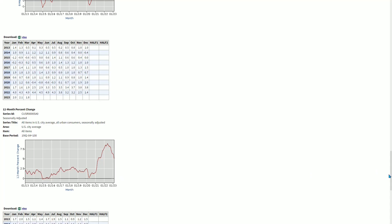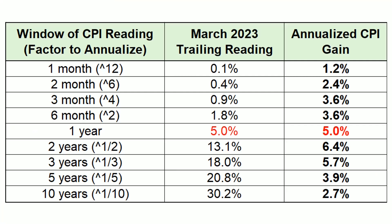There's another way to look at this: the table I've shown in recent months. I take the U.S. CPI in all those snapshot windows — one month, two months, three months, six months, one year, two years, three years, five years, and ten years — and annualize each reading. If a one-month reading was 0.1%, we take that to the 12th power. A two-month reading is taken to the sixth power to get an annualized rate. A three-month reading is taken to the fourth power, and so on.